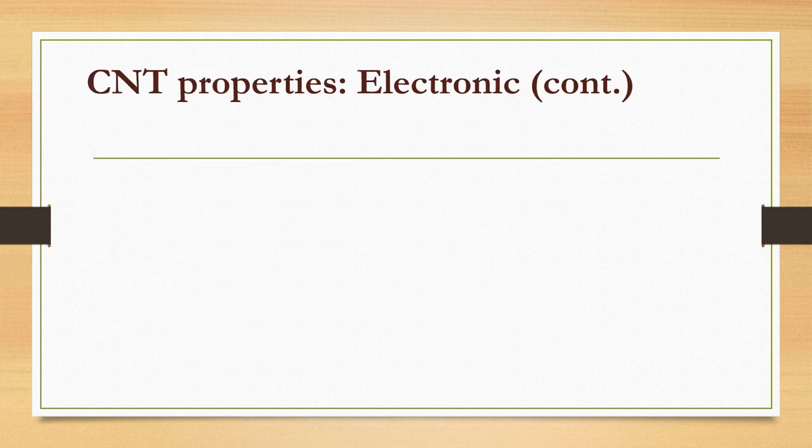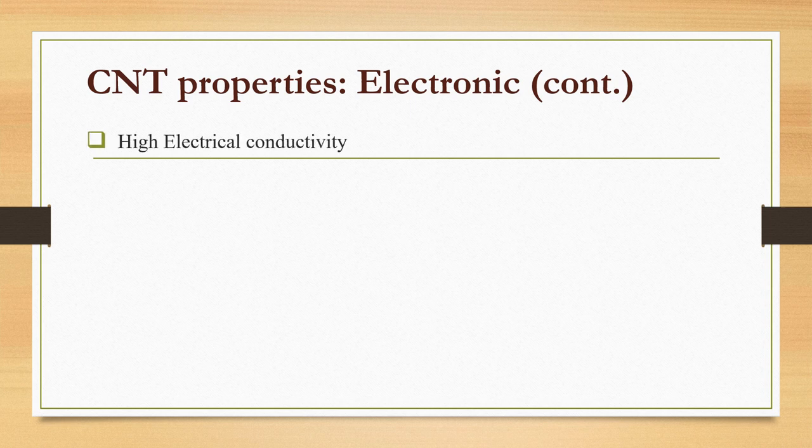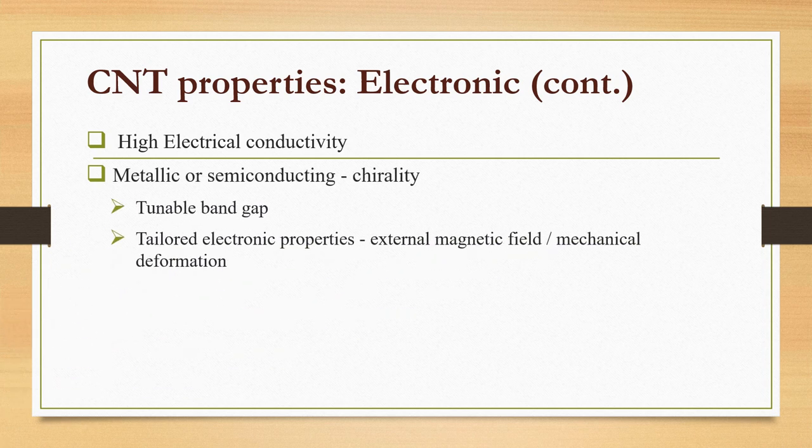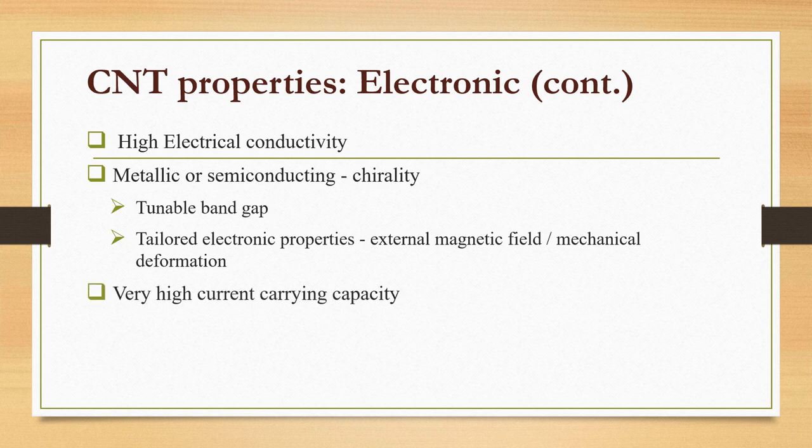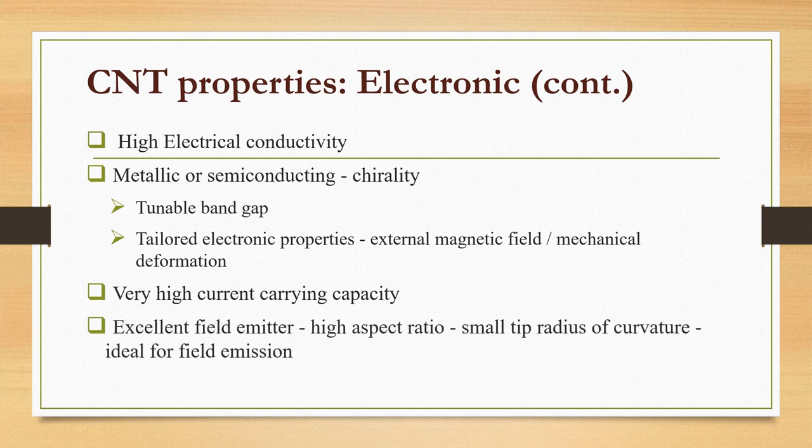A few more electronic properties: Electrical conductivity is 6 orders of magnitude higher than copper. CNTs can be metallic or semiconducting depending on chirality, with tunable bandgap. Most electronic properties can be tailored through application of an external magnetic field or mechanical deformation. They have very high current carrying capacity and are excellent field emitters with high aspect ratio and small tip radius of curvature.